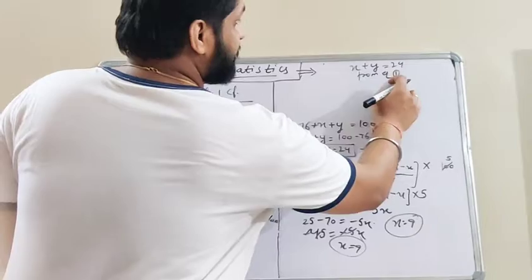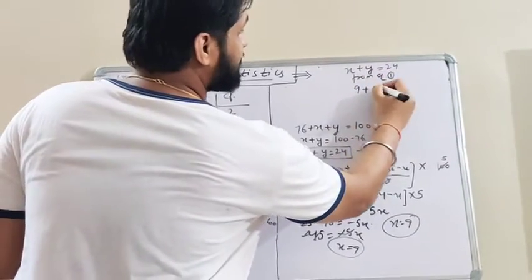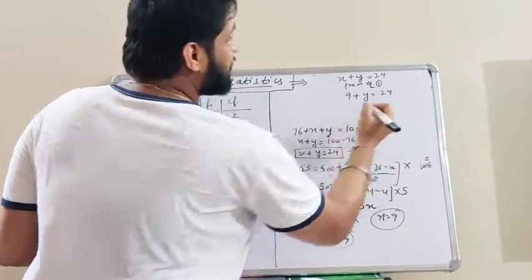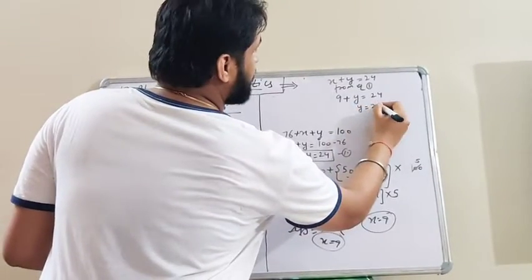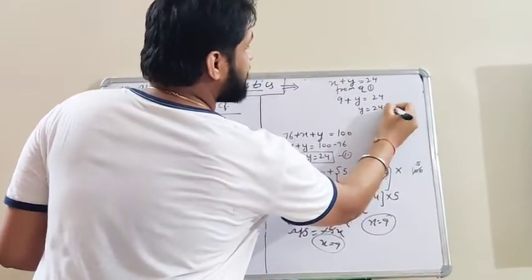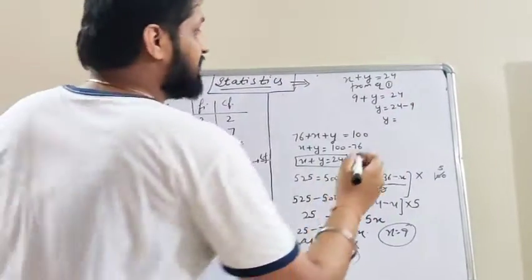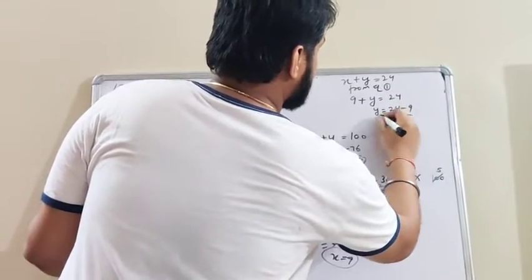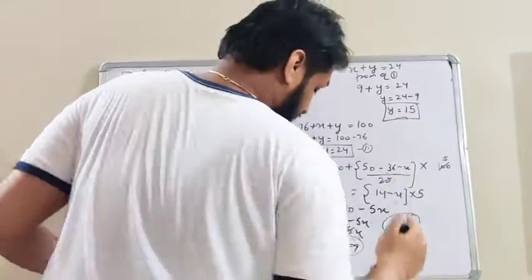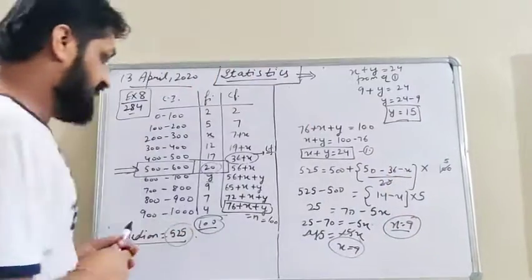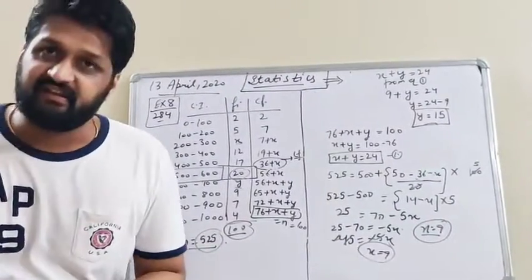Now from equation 1, x plus y equals 24. Since x equals 9, we get 9 plus y equals 24, so y equals 24 minus 9, which equals 15. Therefore the value of x is 9 and the value of y is 15. This completes the question based on the median.